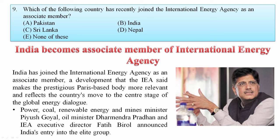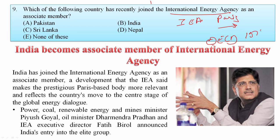Which country recently joined the International Energy Agency as an associate member? The IEA is a Paris-based autonomous intergovernmental organization established within the framework of the OECD — Organization for Economic Cooperation and Development — started in 1974 in the wake of the 1973 oil crisis, with 29 member countries. India became an associate member of the IEA, which is good news for India. Your answer is A.